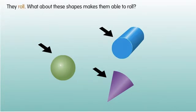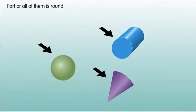What about these shapes makes them able to roll? Part, or all of them, is round.